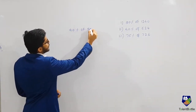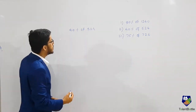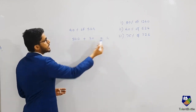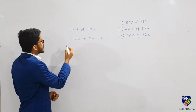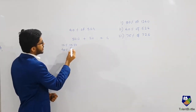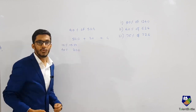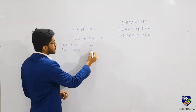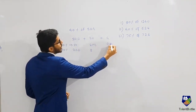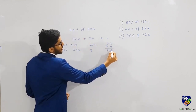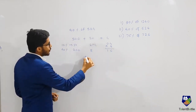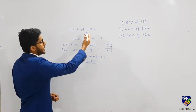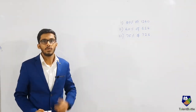Let's check the next problem: 40 percent of 524. Again I split the number — 524 as 500 plus 20 plus 4. 40 percent of 500: 10 percent is 50, so 40 percent is 200. 40 percent of 20: 10 percent is 2, so 40 percent is 8. 40 percent of 4: 10 percent is 0.4, so 40 percent is 1.6. Finally, 200 plus 8 plus 1.6 equals 209.6. By splitting the number we can find the percentage very easily.